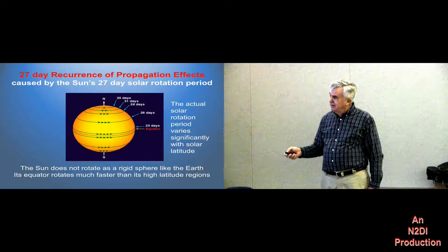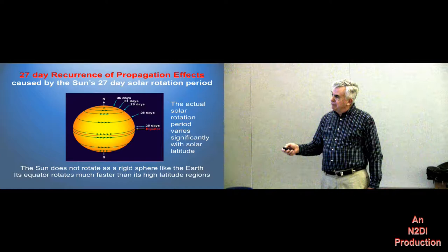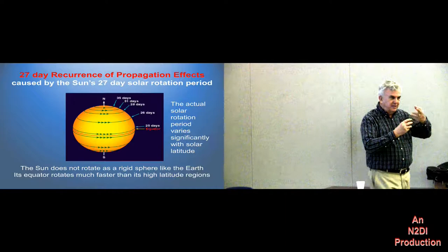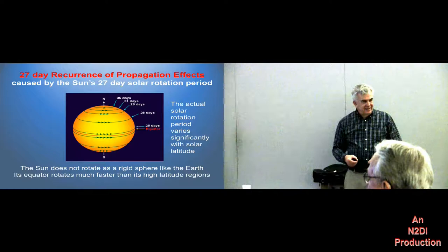Way up at the polar region, it takes about 35 days. And this differential speed is one of the things that causes all this stuff to get all tangled up on the sun. Because it's not solid, it's rotating at different speeds and it's getting all tangled and twisted.